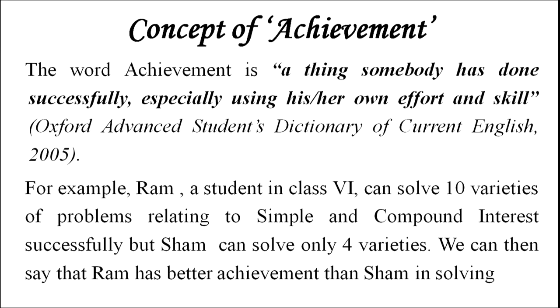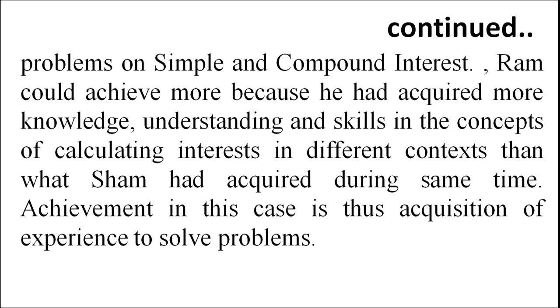For example, Ram, a student in class 6, can solve 10 varieties of problems relating to simple and compound interest successfully, but Shyam can solve only four varieties. We can then say that Ram has better achievement than Shyam in solving these problems. Ram could achieve more because he had acquired more knowledge, understanding and skills in calculating interest in different contexts than Shyam. Achievement in this case is thus the acquisition of experience to solve problems.